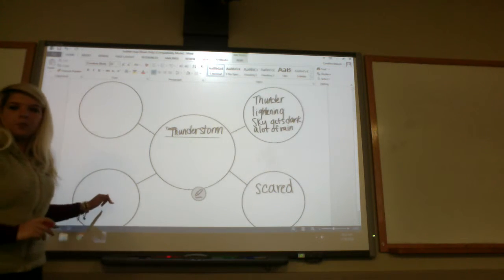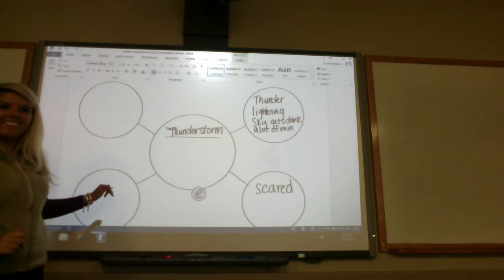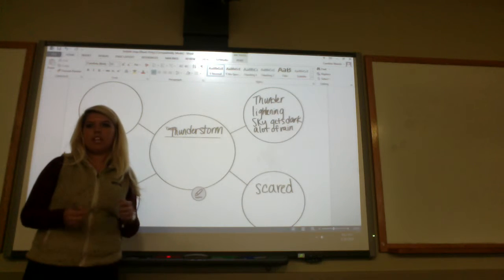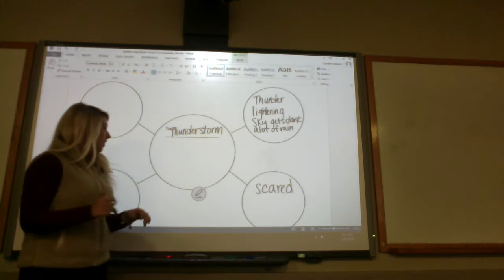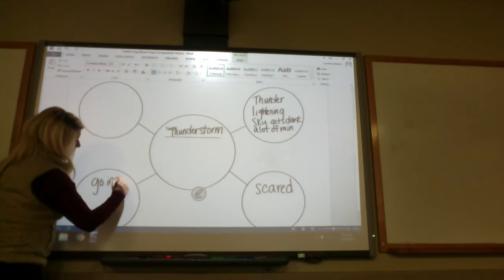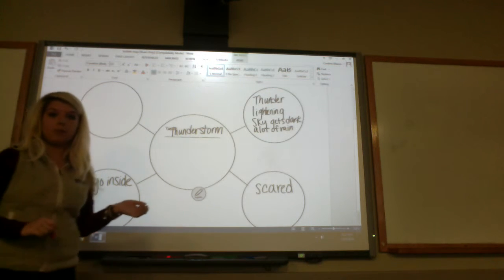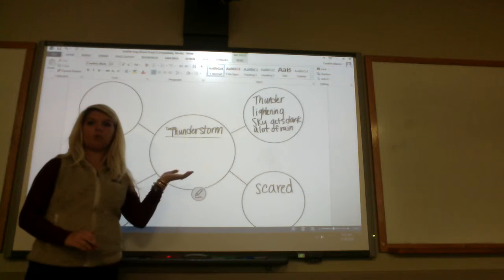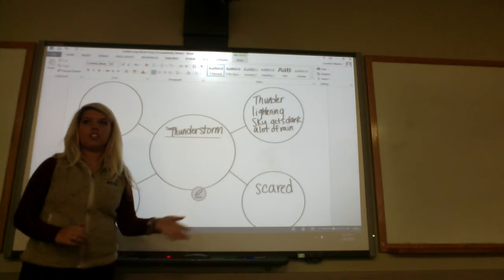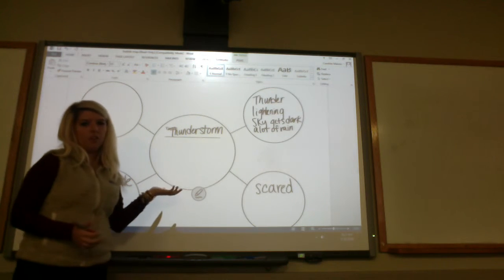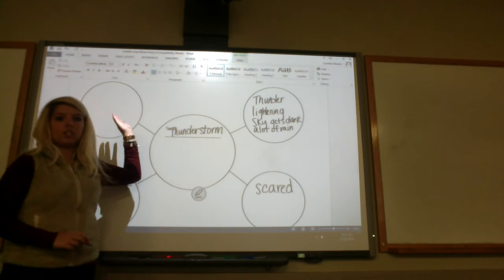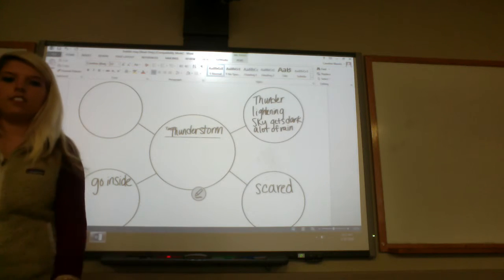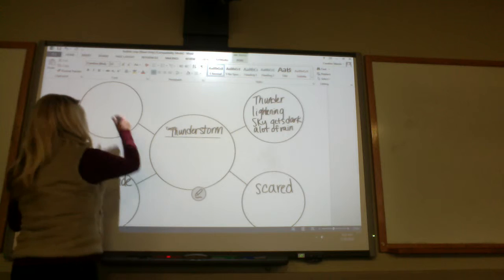Okay, then down here we are going to put what we do when this type of storm happens. So in a thunderstorm what do you do when a thunderstorm is about to happen? You go inside. Okay, so the book told us that we should go inside when a thunderstorm is about to happen. Anything else the book didn't say? Okay, so let's stick with that. For different types of storms we do different things. So then our last bubble up here is going to be questions that we still have about thunderstorms. So what are some questions that you guys still have? Why are thunderstorms so loud? Okay, why are thunderstorms loud?